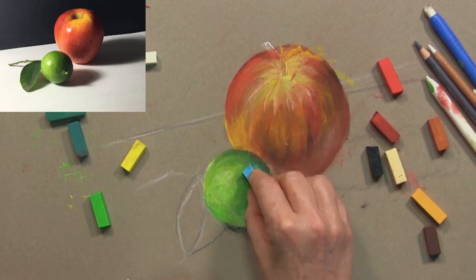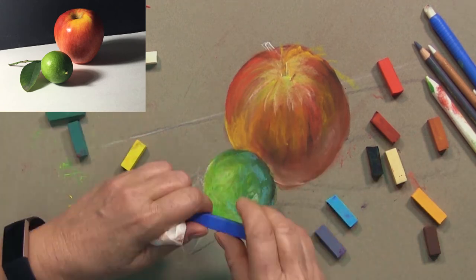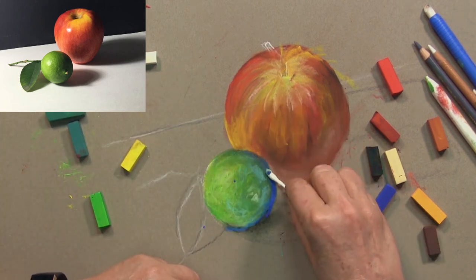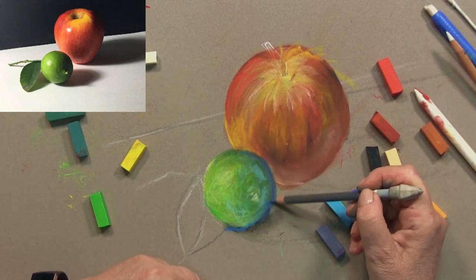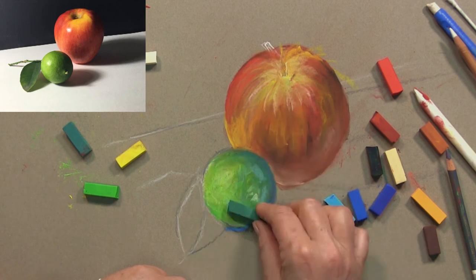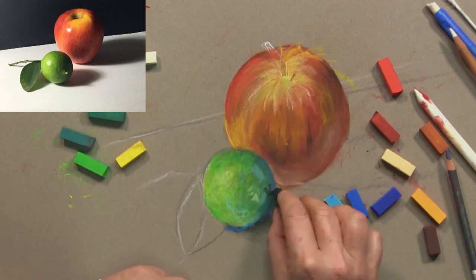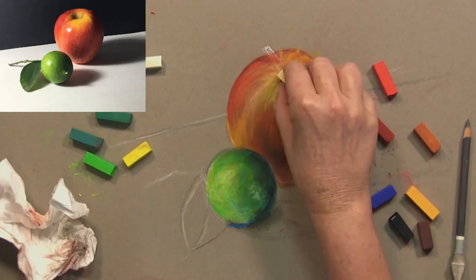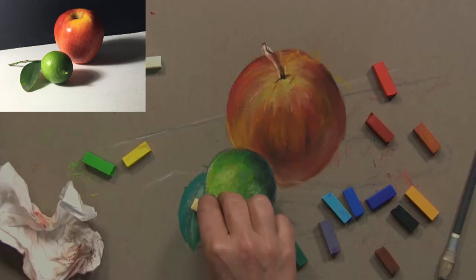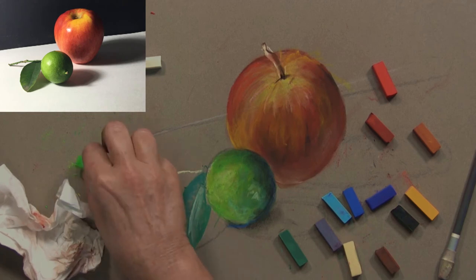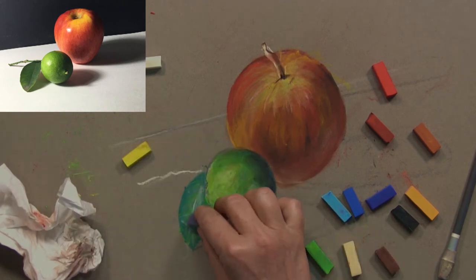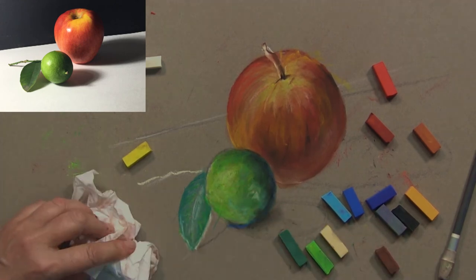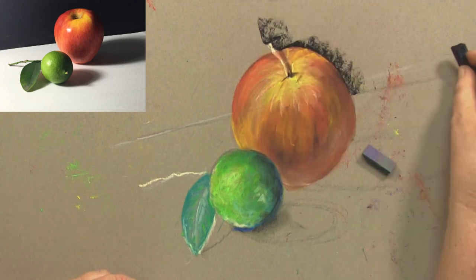Now notice I haven't done the background. The background is solid black and an almost solid white for the table. There's no gradient. There's really no texture with the exception of the cast shadows, so I'm doing all the hard work now doing the light logic and the color on the lime and the apple first. I'm going to put the leaf color in, using leaf greens and a creamy soft pastel to highlight the edges of the leaf, some lime green accents and a darker forest green to give it a little bit more depth.